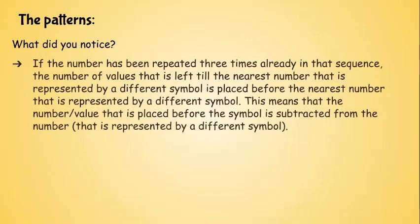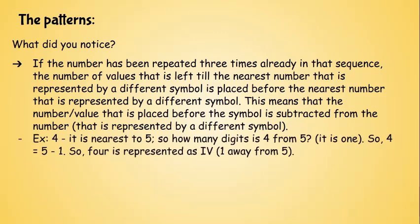The other patterns or what did you notice? If you looked at the patterns and the list that was given to you, you could see all the patterns there. This is the second type of patterns that you may have noticed. So if the number has been repeated three times already in that sequence, the number of values that is left till the nearest number that is represented by a different symbol is placed before the nearest number that is represented by a different symbol. This may sound complicated, but when I give you examples, you'll get it. This means that the number or value that is placed before the symbol is subtracted from the number that is represented by a different symbol. So I know this may just be like so complicated.